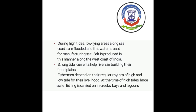During high tides, low-lying areas along the sea coast are flooded, and this water is used for manufacturing salt. (Ucch jwaar ke dauran, samudra ke tatton ke saath nichle ilaakon mein baadh aa jaati hai, aur is paani ka upyog namak banaane ke liye kiya jaata hai.) Salt is produced in this manner along the west coast of India. (Bharat ke pashchimi tat ke saath, is tarah se namak ka utpaadan kiya jaata hai.) Strong tidal currents help rivers in building their flood plains. (Mazboot jwaar ki dharaayen, nadiyon ko unke baadh ke maidanon ke nirmaan mein madad karti hain.)